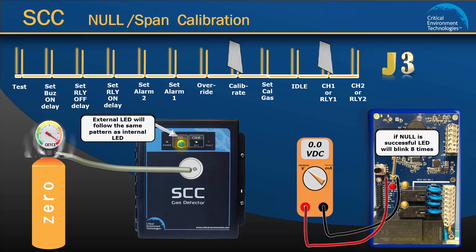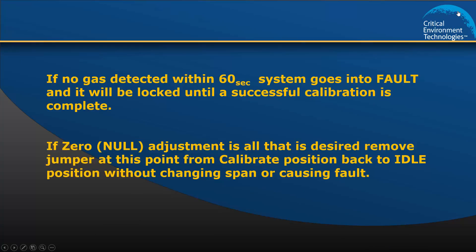Next, the LED lights will repeatedly blink 4 times and then pause long off. This means it is time to flow the span gas. This must be done within 60 seconds or the unit will be locked into a fault condition until successful calibration is completed. If a zero or null adjustment is all that you are wanting to do, move the jumper from the calibrate position back to idle.